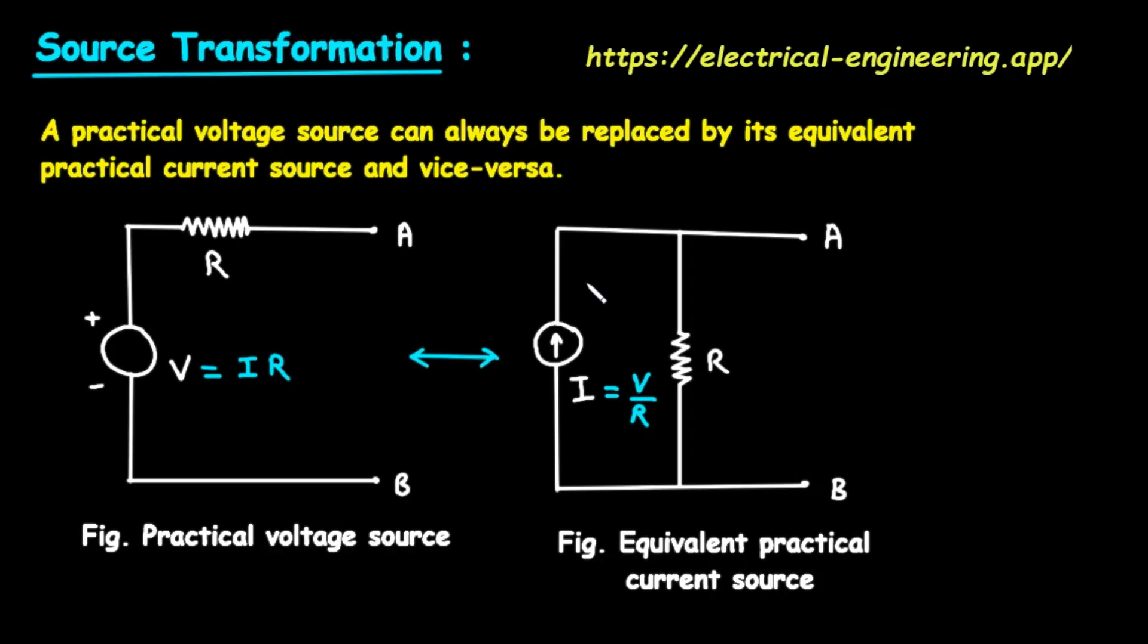Now, let's look at the second key phrase, practical current source. If we look at the diagram on the right, labeled Fig. Equivalent practical current source, we see the model for this. Just like with voltage sources, real world current sources are not perfect. A practical current source is a model that includes this imperfection. It also has two components, but this time they are connected side by side, which we call a parallel connection.